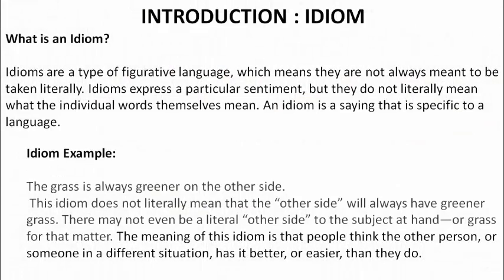So what is an idiom? Idioms are a type of figurative language, which means they are not always meant to be taken literally. When idioms are given in a sentence, their actual meaning is different from the words used. For example, 'it is raining cats and dogs' is an idiom for raining heavily.